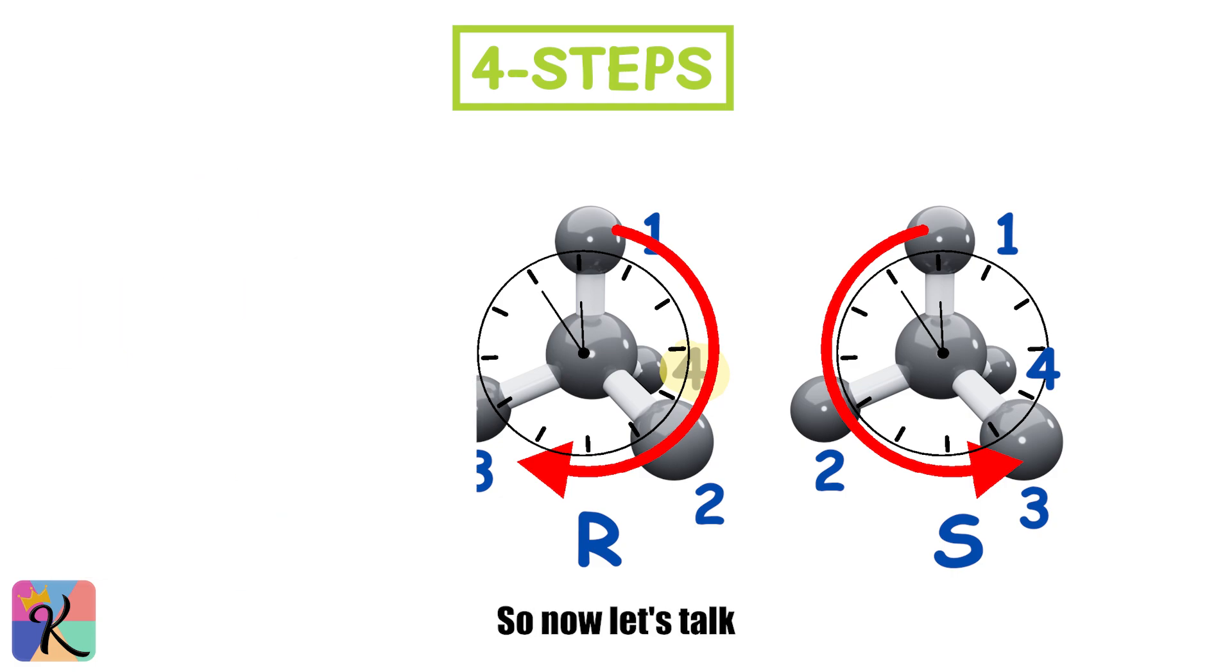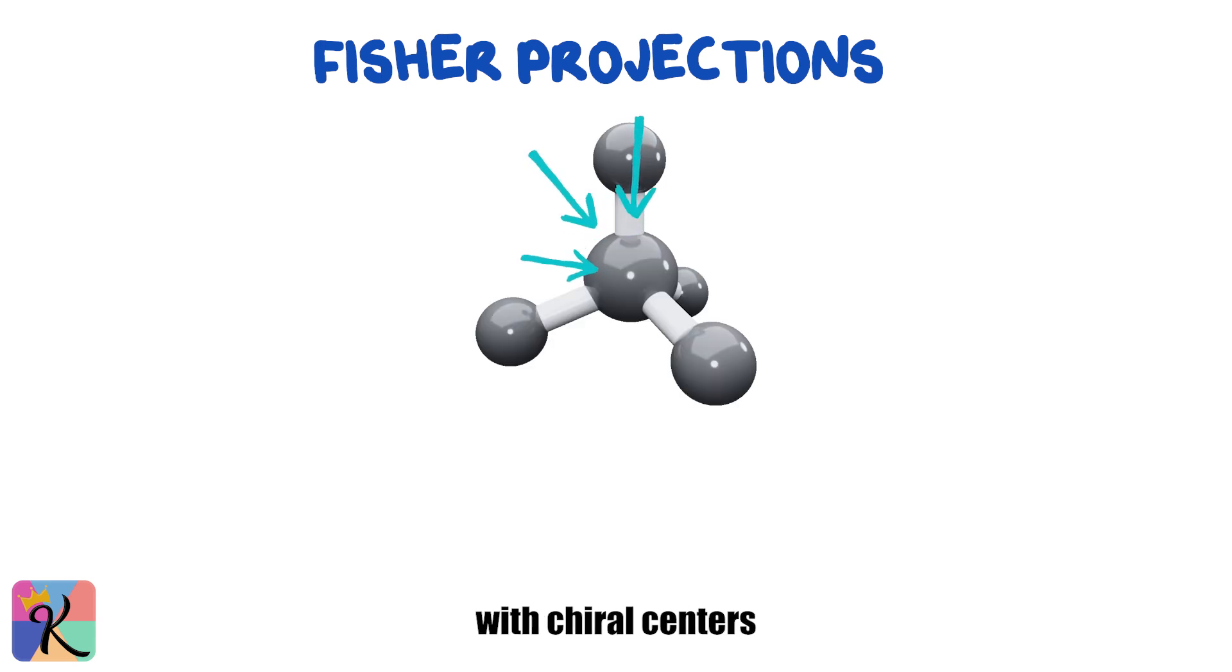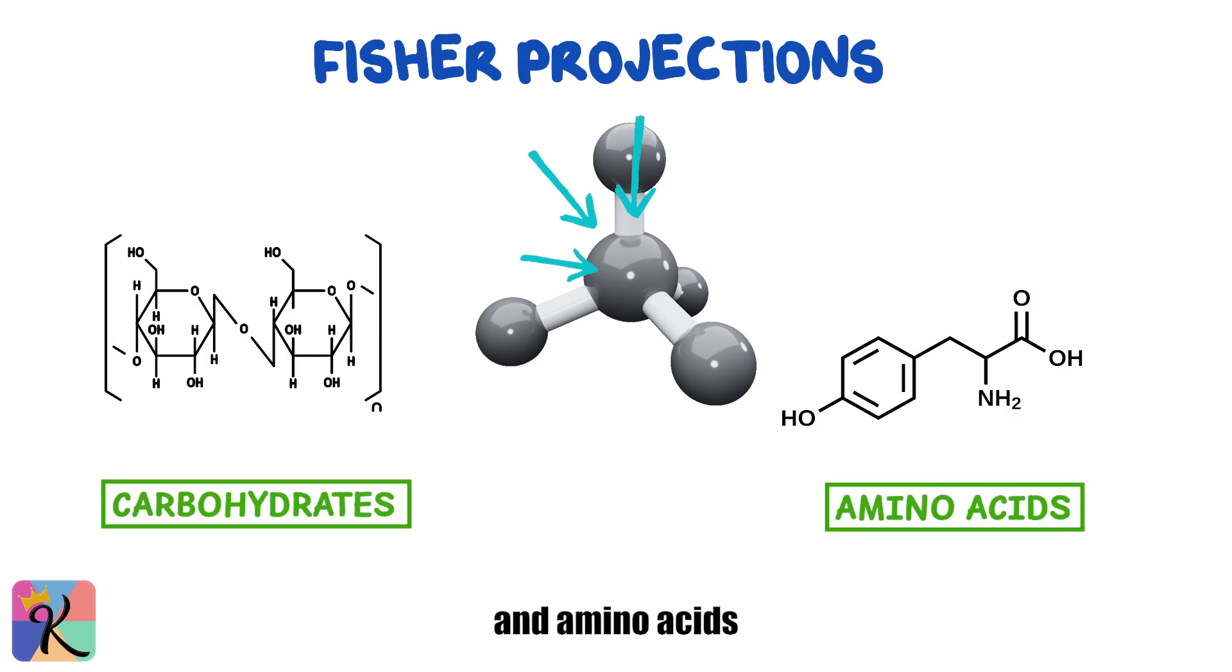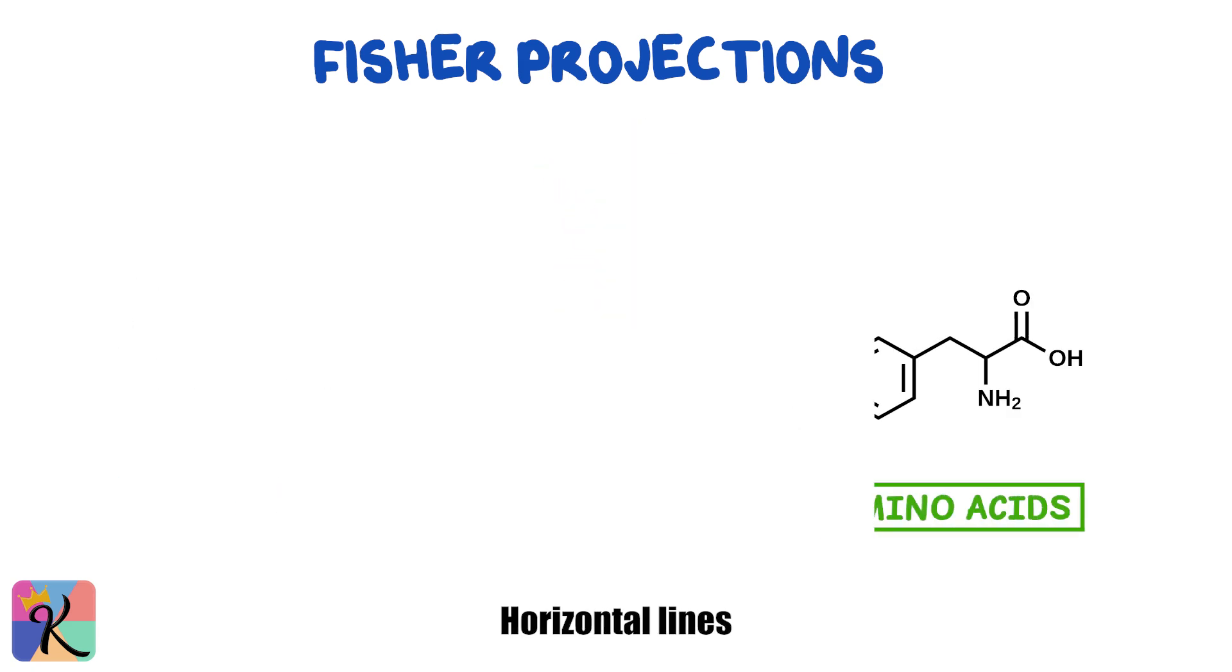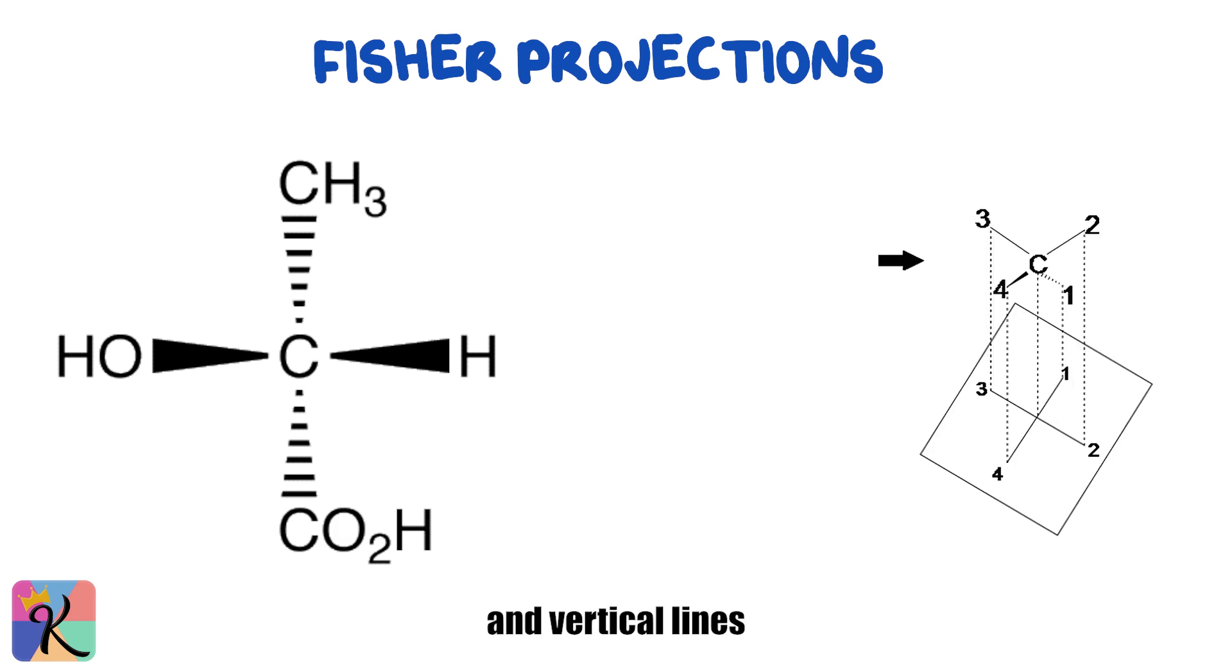Alright, so now let's talk about Fischer projections. These are a common way to represent molecules with chiral centers, especially in carbohydrates and amino acids. In a Fischer projection, horizontal lines represent bonds that come out of the plane of the page, and vertical lines represent bonds going into the page.